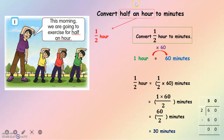Let's say there is a quarter of an hour. Quarter means 1 over 4. If 3 quarters, that means 3 over 4. This is what we learn in Year 4.